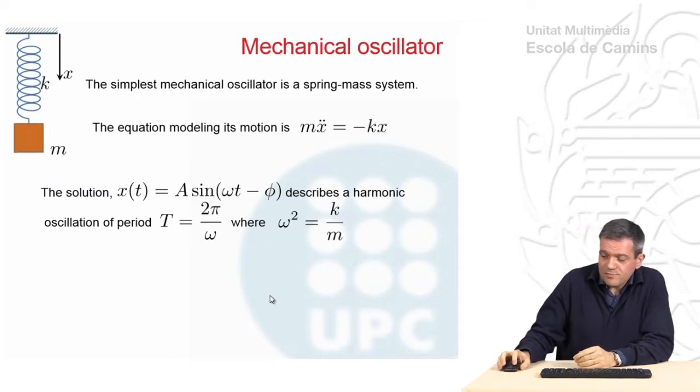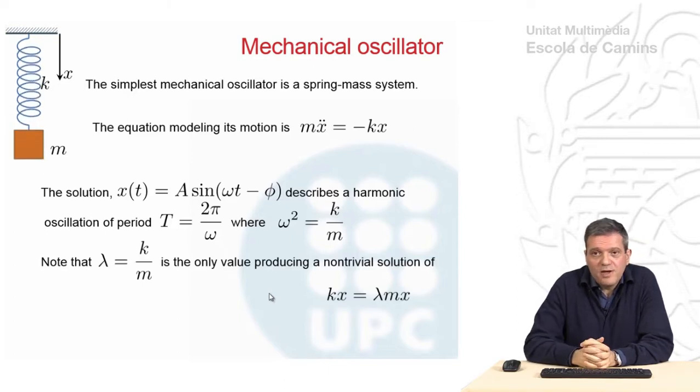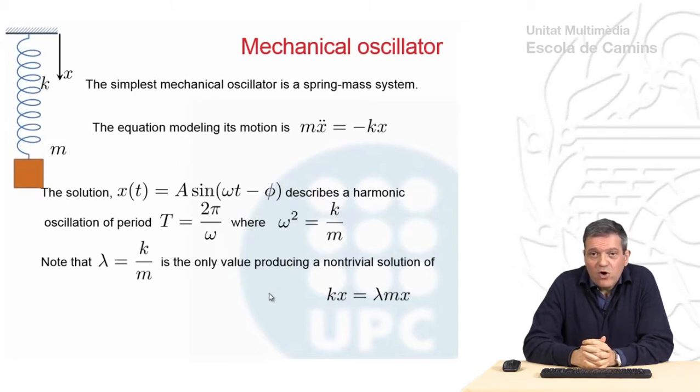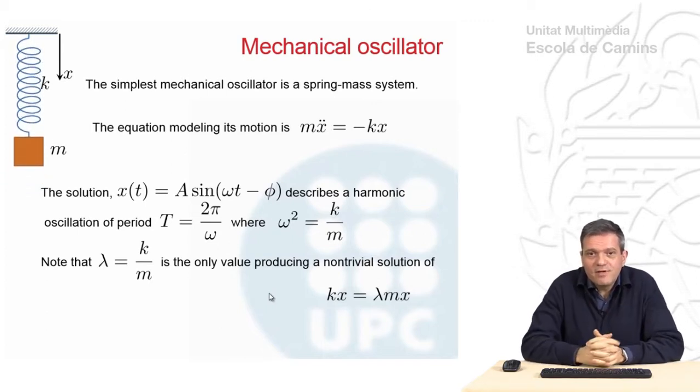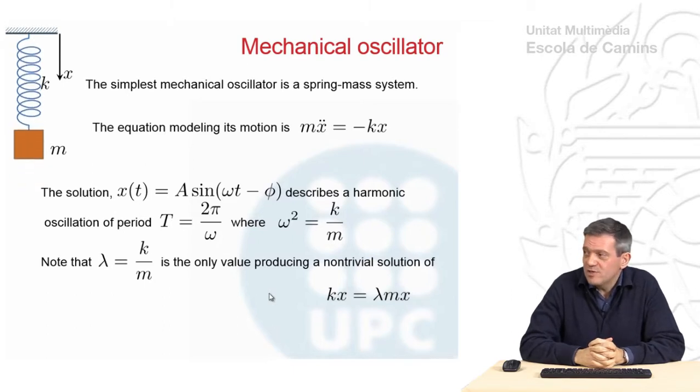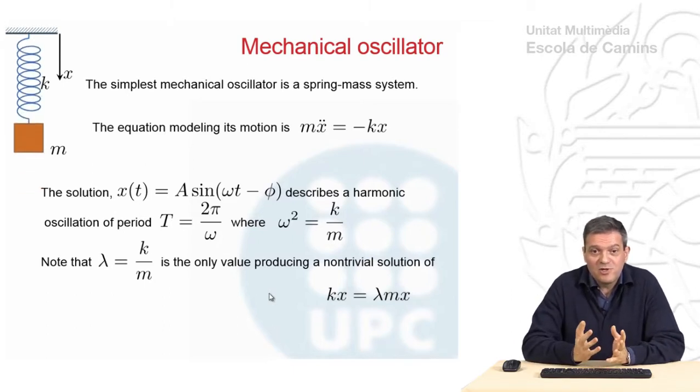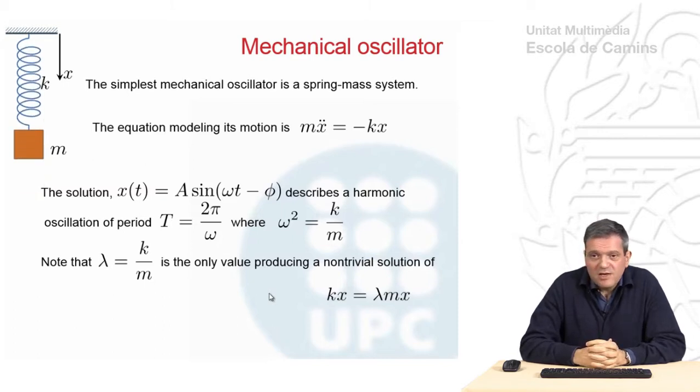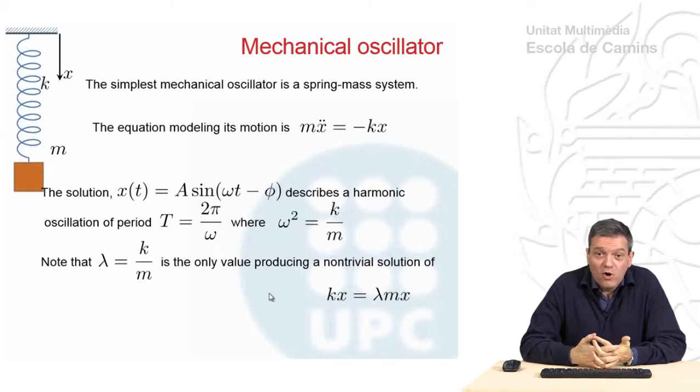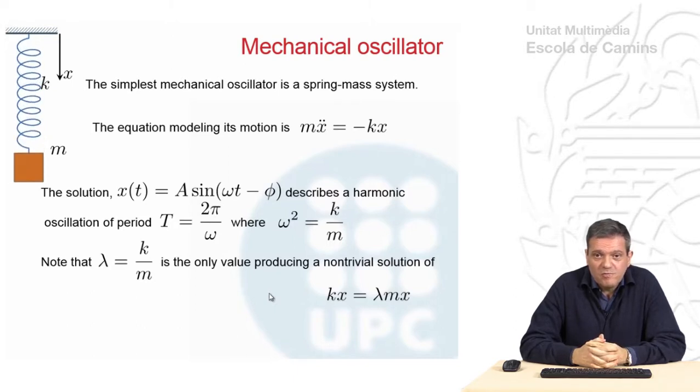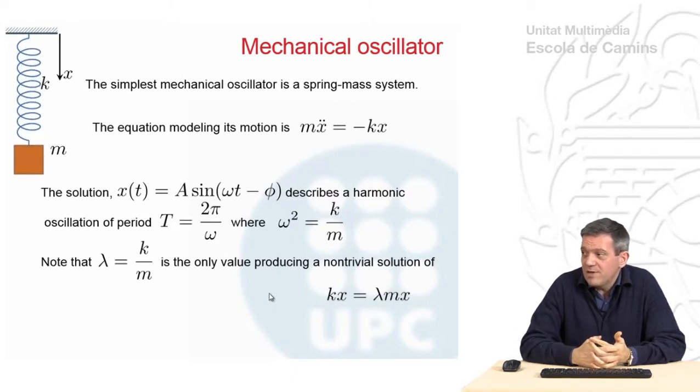The period, the inverse of the frequency, is 2pi divided by omega, being omega such that omega squared is K over M. We can notice here that this omega K over M, if we call it lambda, is the only value that provides a non-trivial solution of the eigenvalue problem, which is a very simple one with just numbers instead of matrices: K times X equal to lambda MX. If you take lambda different than K over M, there is no solution or only 0 is the solution. But if you take lambda equal to K over M, every value of X is the solution.